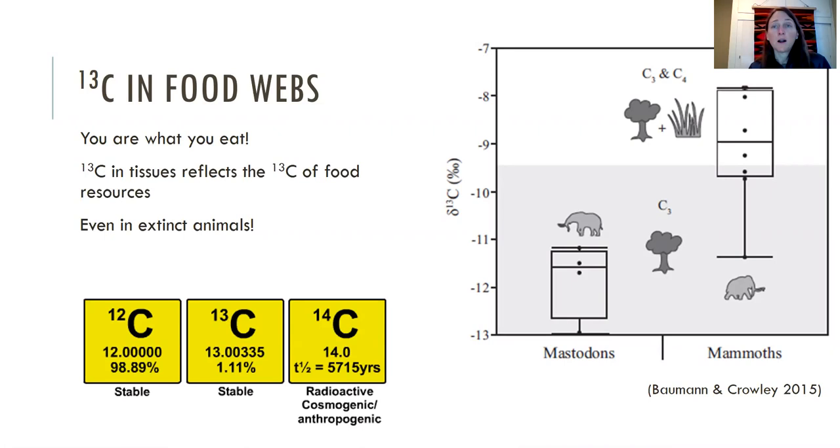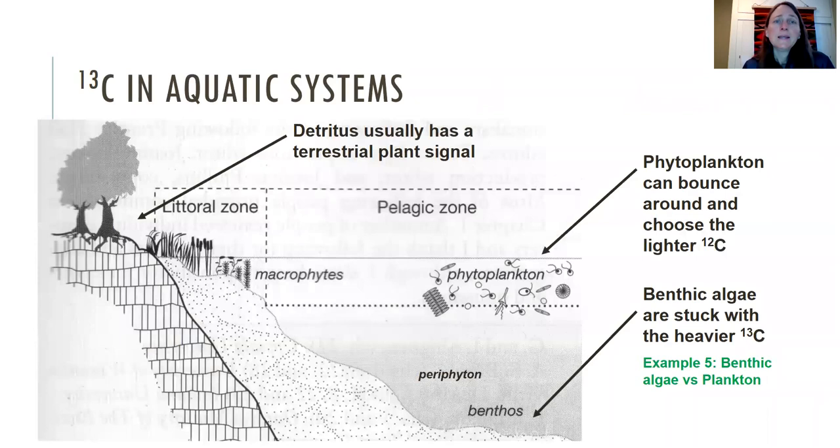I'll talk about mixing models a little bit later, but basically there's some mathematical models that you can use to try to tease things apart when an organism is eating more than one thing.